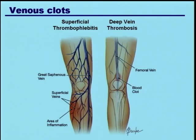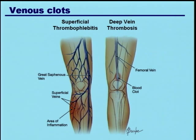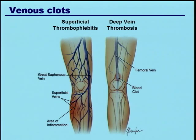It's the deep vein thromboses that can travel to the lungs and cause pulmonary embolism. Superficial clots don't tend to travel anywhere — they're small vessels, the clots aren't very mobile, and they tend to be fairly localized. They're not really risk factors for pulmonary embolism, other than to say that the things that lead to superficial clots can sometimes lead to DVT as well. So it's important to keep these things separate.